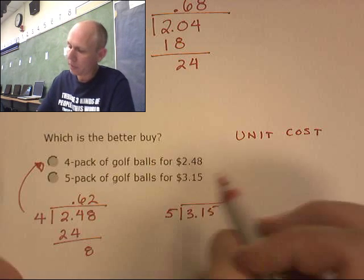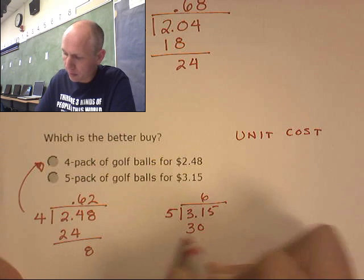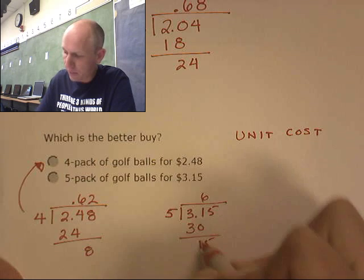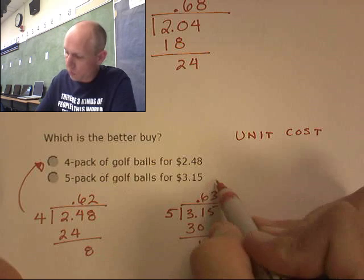Let's check the other one out. 5 goes into 3 six times and 5 goes into 15 three times. This one cost 63 cents per golf ball.